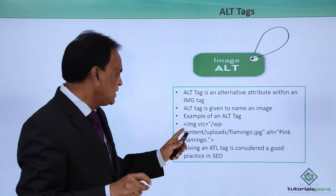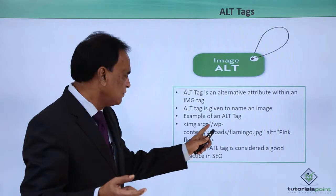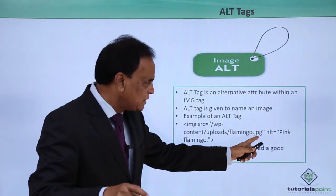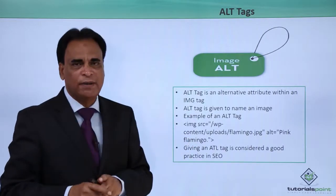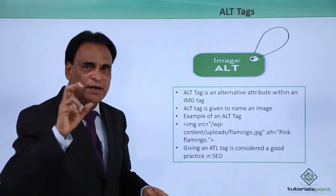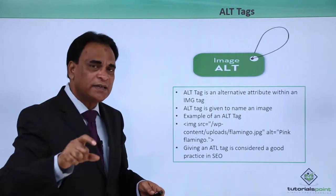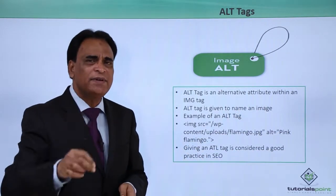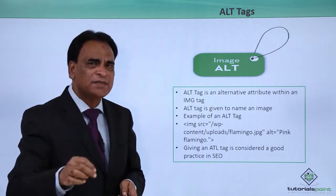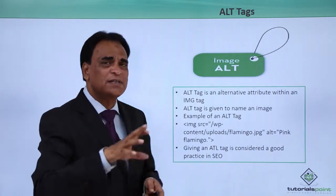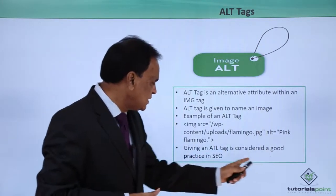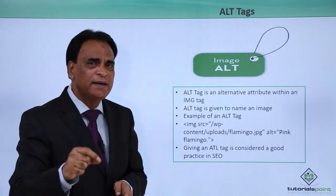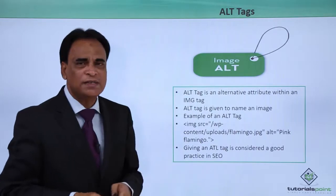An example of a good alt tag: the image source equals a WordPress site link — wp-content/uploads. If you have an image that is a flamingo, name it flamingo.jpg and give the alternative tag as 'pink flamingo'. This is a good example of image optimization as far as alt tags are concerned. It is basically identifying the image you are uploading. Each and every image must have an alternative tag so that search engines understand what the image is all about. Giving an alt tag is considered a good SEO practice — identify the image and give it a name.